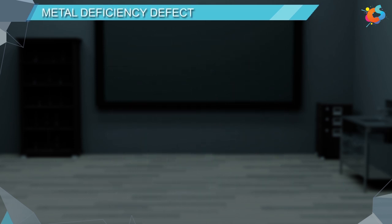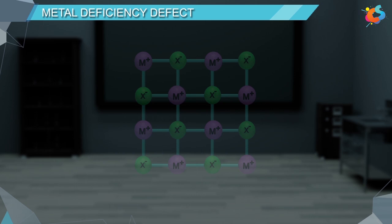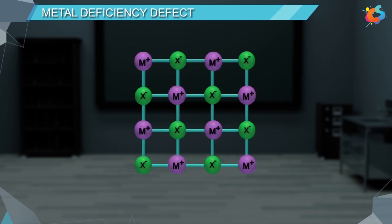Metal deficiency defect. This kind of metal deficiency defect is created when a metal ion goes missing from its original lattice site. To maintain the charge neutrality, same metal ion having higher positive charge is added to occupy the vacancies created in the crystal. As this metal ion has higher positive charge, it will occupy only some of the sites to balance the overall charge and other sites will be left vacant.